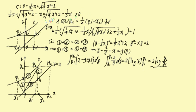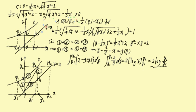なぜかというと、2分の1x全体の二乗が4分の1x二乗プラス2よりも小さいからですね。というわけで、CはyイコールXの上の部分を常に通るということがわかります。図の位置関係でいえば、ここがこういうふうになると。